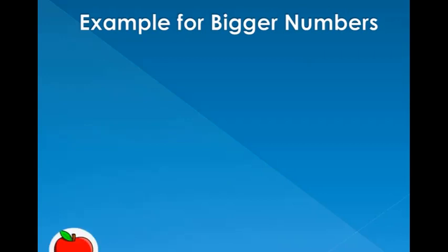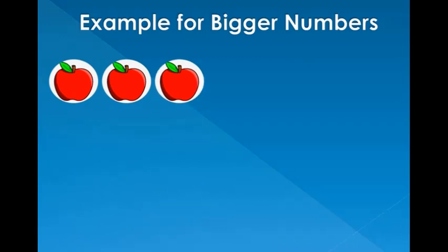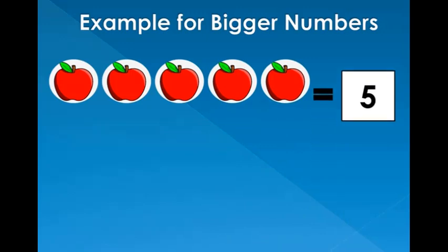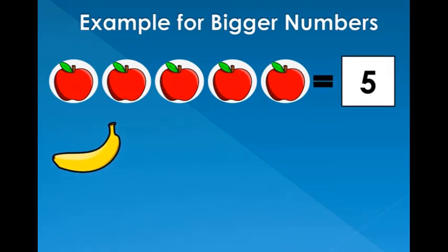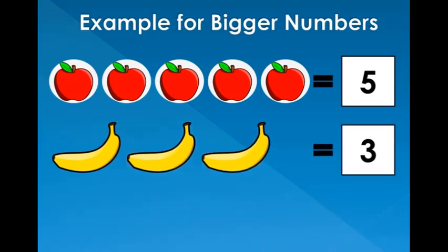1, 2, 3, 4, 5. There are five apples. 1, 2, 3. There are three bananas. So children, can you tell me which number is more, five or three? Correct! Five is more or bigger.